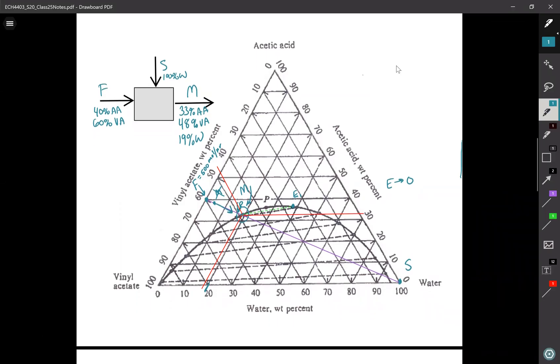Now that I've got my composition of my mixing point, I can now do material balances. I know what my feed was. My feed is 500 moles per hour. So my unknown variable here is S. And I have three material balances that I can solve for. Also, M is unknown too. So I need to pick two out of the three material balances.